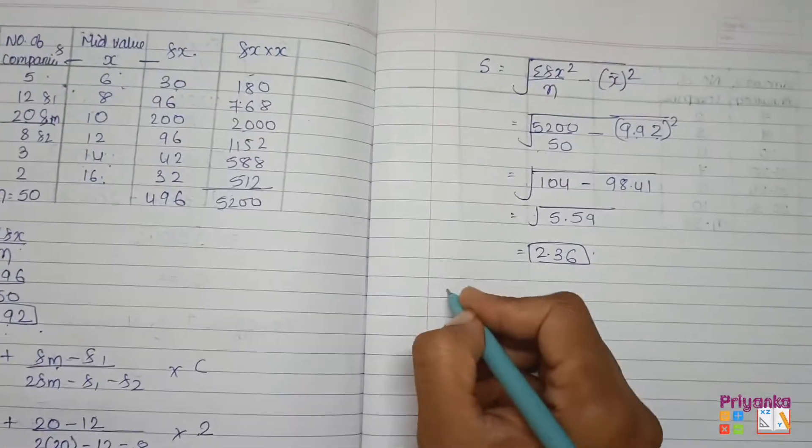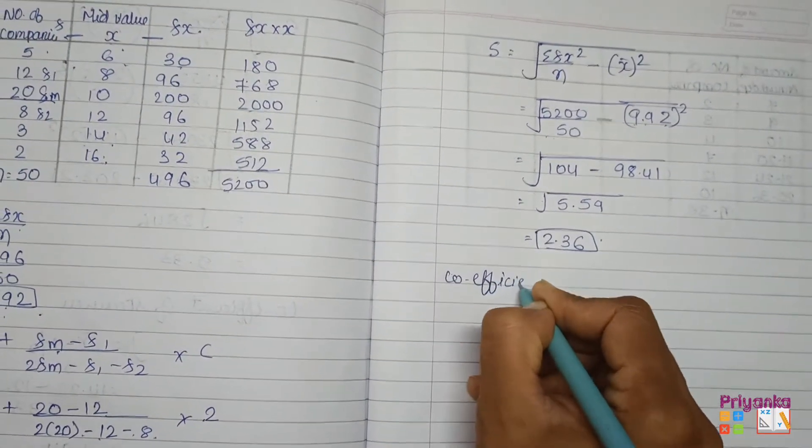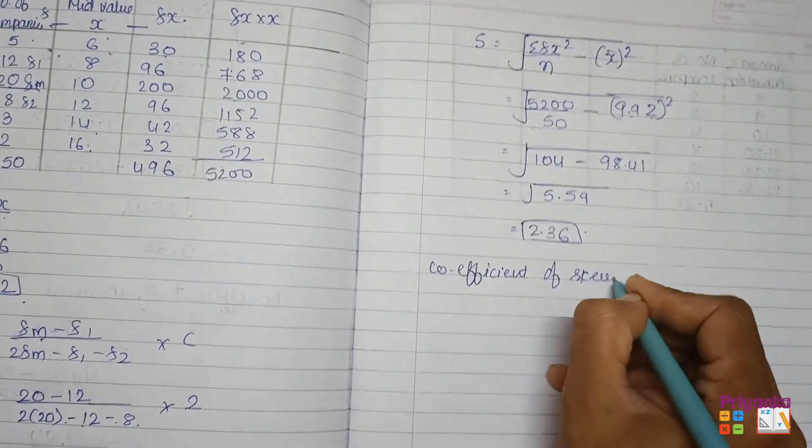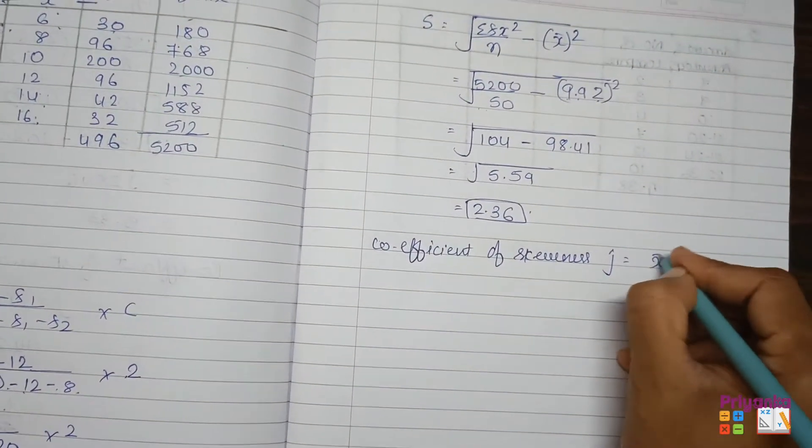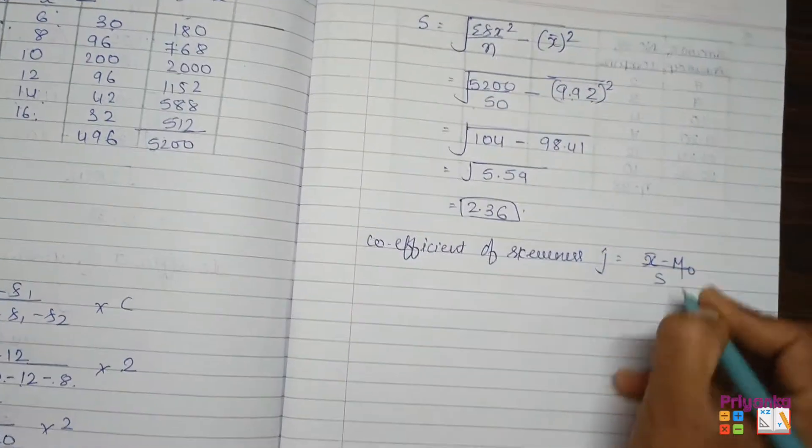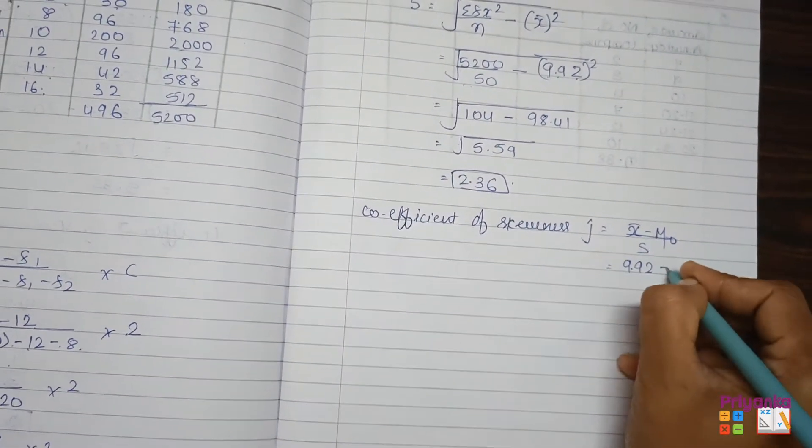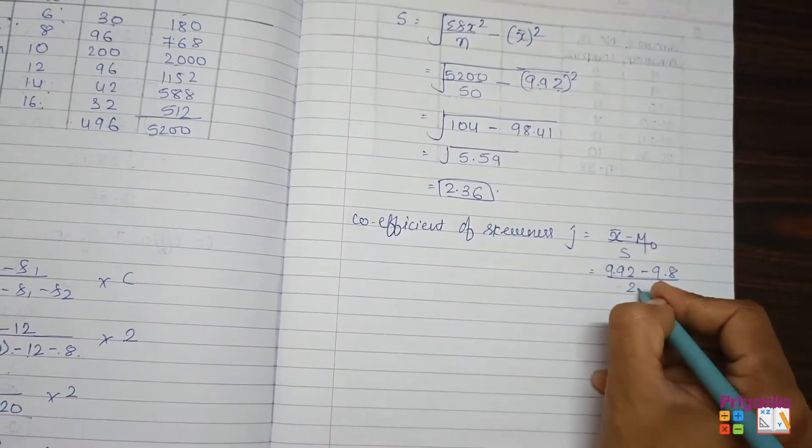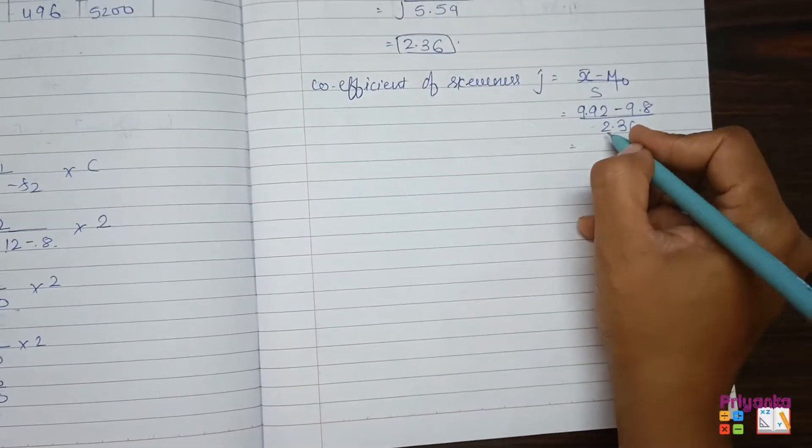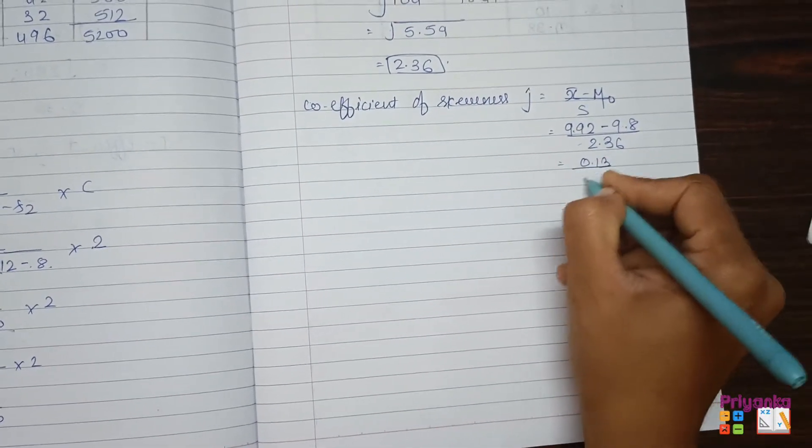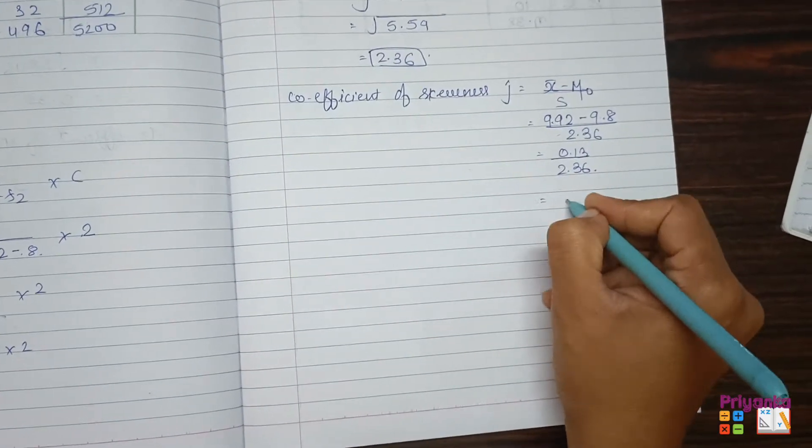Now we find coefficient of skewness using J equals (mean minus mode) divided by standard deviation. That's (9.92 minus 9.8) divided by 2.36. 0.12 divided by 2.36 equals 0.05. That's your coefficient of skewness.